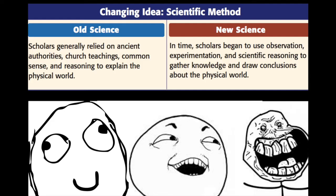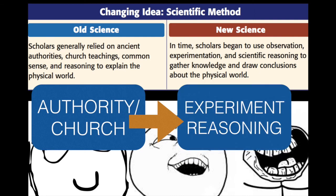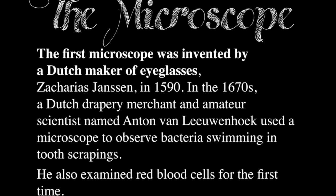Moving to the last few pages: an overview of old science versus new science. Old science is about relying on ancient authority — relying on the church. New science is about observation and experimentation. It's about using scientific reasoning to gather knowledge and draw conclusions. The key is experimentation: forming hypotheses, finding evidence, and drawing conclusions. A big shift — from authority and the church, toward experiment and reasoning.